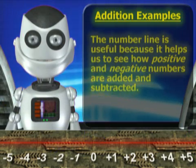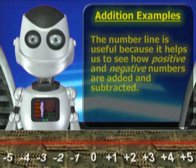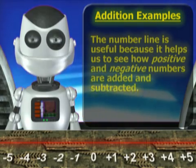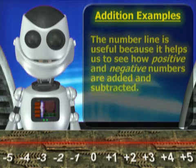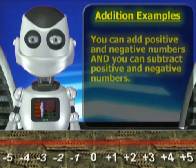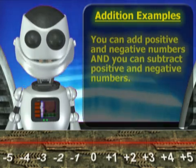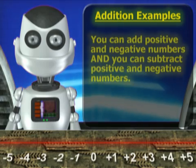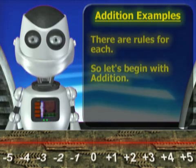The number line is useful because it helps us to see how positive and negative numbers are added and subtracted. You may have already learned in school that you can add positive and negative numbers, and you can subtract positive and negative numbers. There are rules for each, so let's begin with addition.